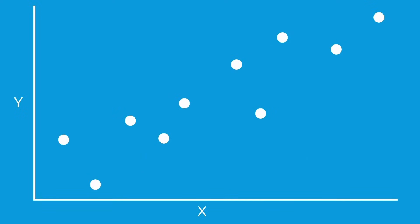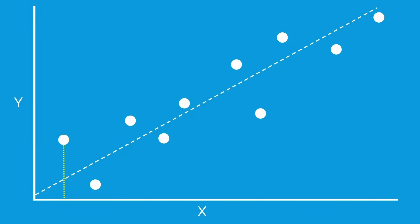Imagine that you have a set of data points in x and y, and you want to find the line that best fits the data. This is also called regression. For a given x, you have the y value from your data and the y value predicted by the line. The difference between these two values is called the error, or residual.